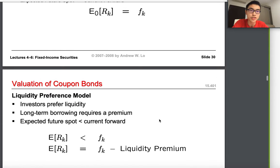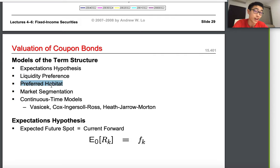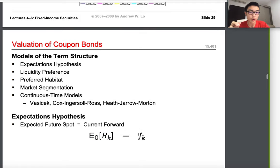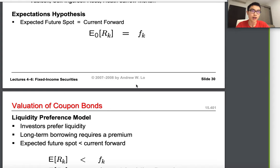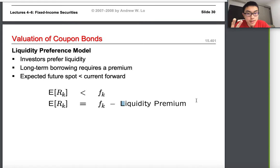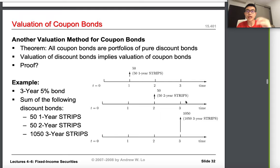The third model — Preferred Habitat — is more vague: it really depends on the time, the person, and the market. Preferred maturities differ across different times and interest rates differ at those preferred maturities. Proponents believe neither that the expected future spot rate equals the current forward rate precisely, nor that long-term borrowers always want a liquidity premium — some people prefer three-year maturity, others more or less.